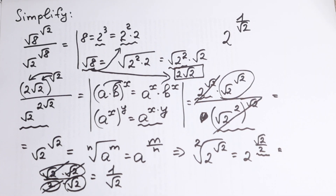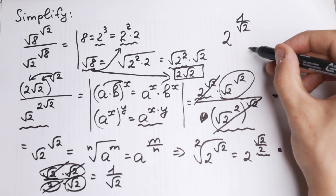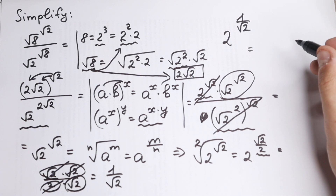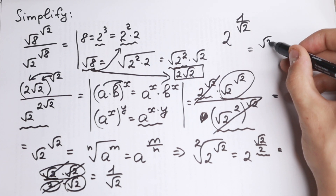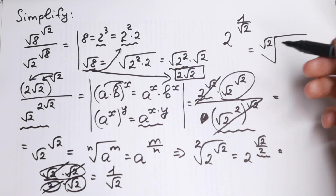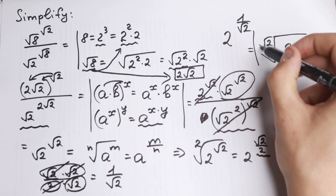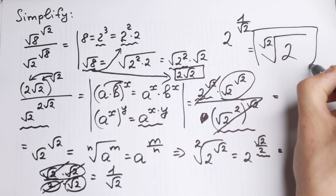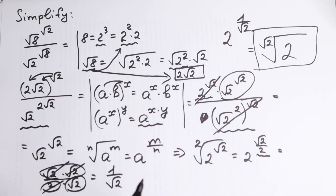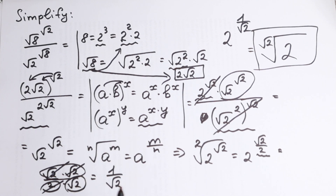Or if you prefer another form, we can rewrite it as the square root of 2 to the square root of the second root of 2. This is our answer. Really good problem — we used three rules. Try to solve it by yourself!